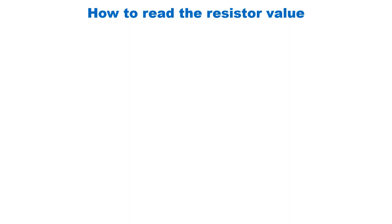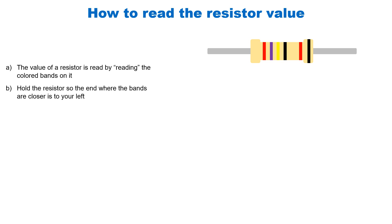Let's see how to read the value of a resistor. When you look at a resistor, it will have different color bands on it — those colored bands represent the value of the resistor. You hold the resistor at the end where the bands are closer to your left, just like shown in the figure. Ignore the black band on the extreme right; the red, blue, yellow, and black bands should be to your left.